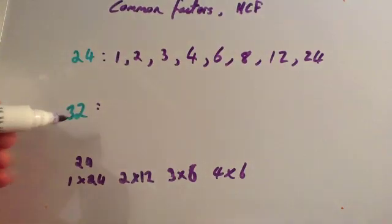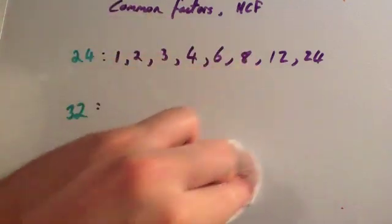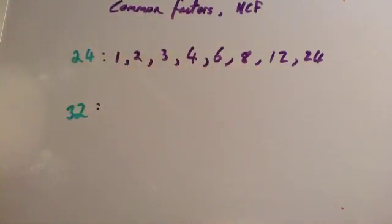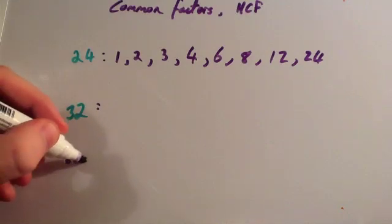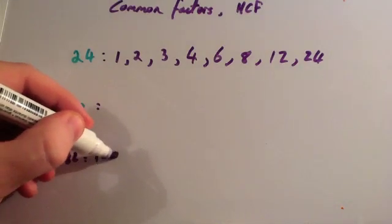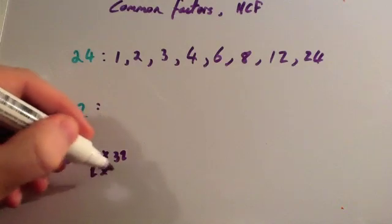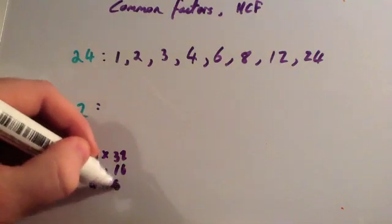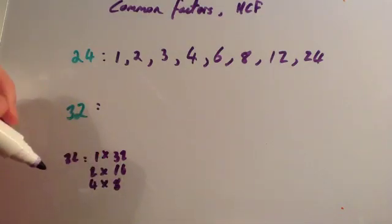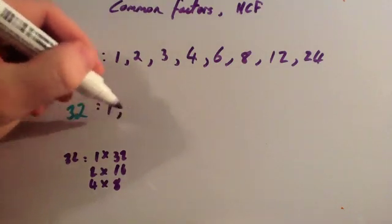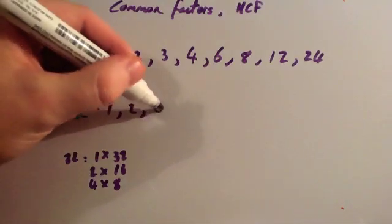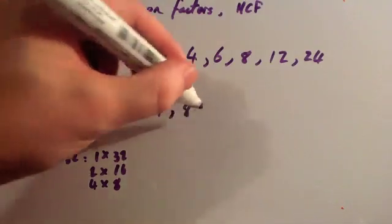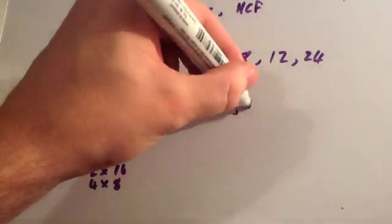Let's now find the factors of 32. The factors of 32 are: 1 times 32, 2 times 16, 3 — no. So 4 times 8, 5 — no, 6 — no, 7 — no. So the factors of 32 are 1, 2, 4, 8, 16 and 32.